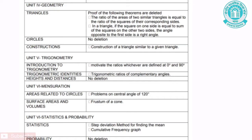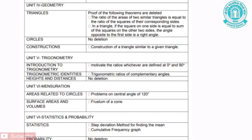Unit 5 is Trigonometry. The first chapter is Introduction to Trigonometry. The topic removed is motivating the ratios defined at 0 degrees and 90 degrees. The second chapter is Trigonometric Identities. The topic removed is Trigonometric Ratios of Complementary Angles. The third chapter is Heights and Distances — there is no deletion of topics under this chapter.